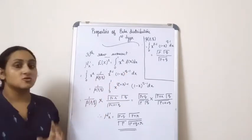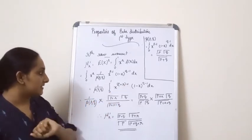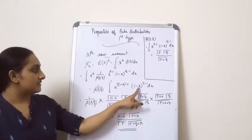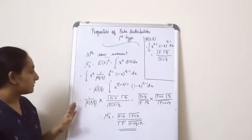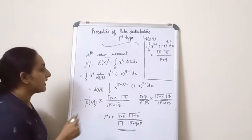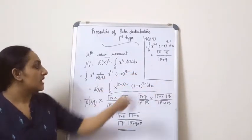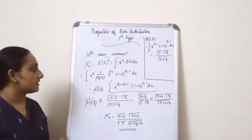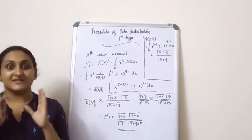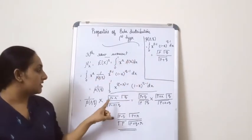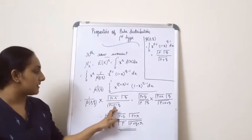Since 1/Beta(p,q) is a constant, we take it outside the integral. This gives x^(p+r-1) * (1-x)^(q-1) dx. Now compare this integral with the Beta function result shown earlier. When you compare, you find that p in the result is replaced by p+r here. So you can write Gamma(p+r) instead of Gamma(p), and q remains as is, giving Gamma(q) in the numerator and Gamma(p+r+q) in the denominator.